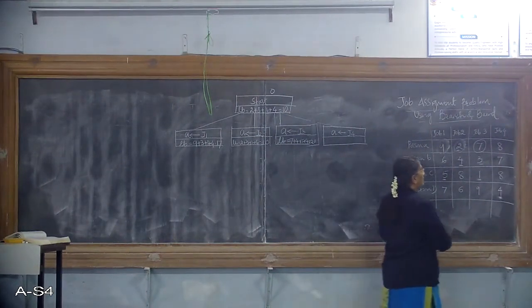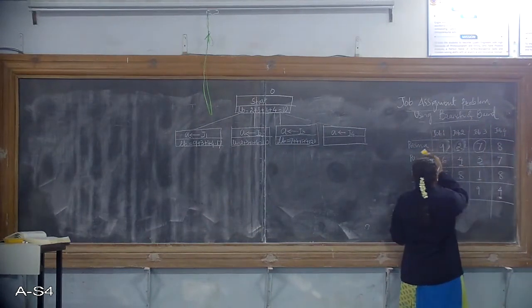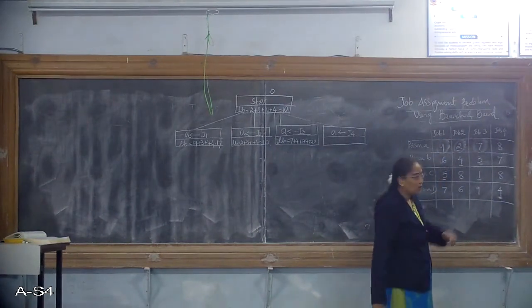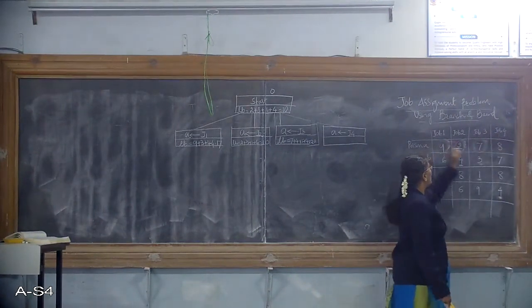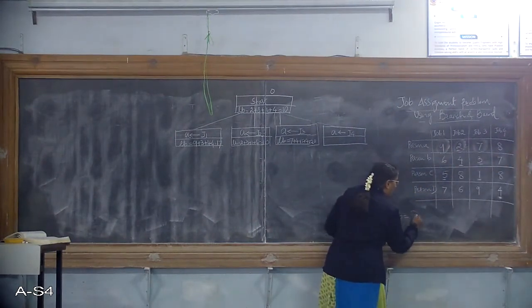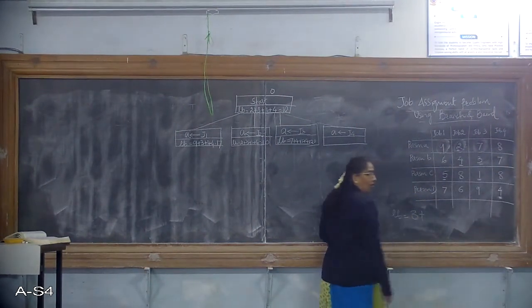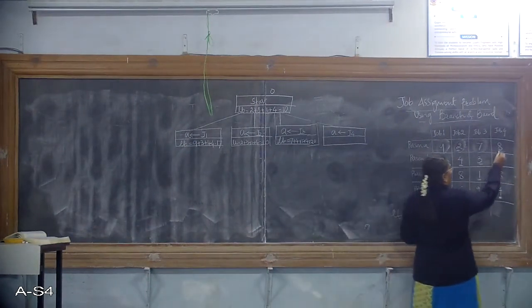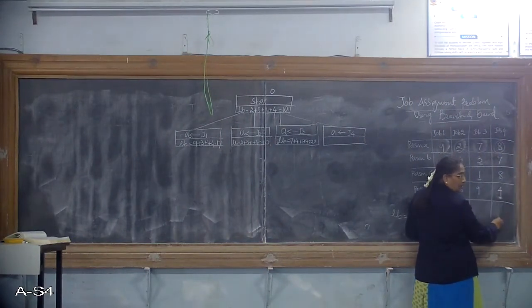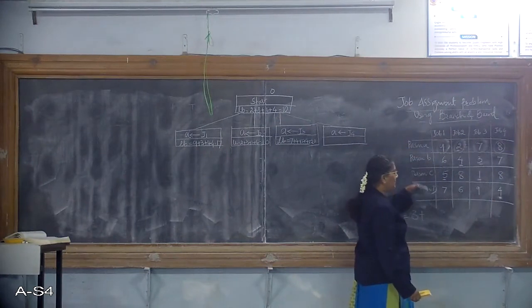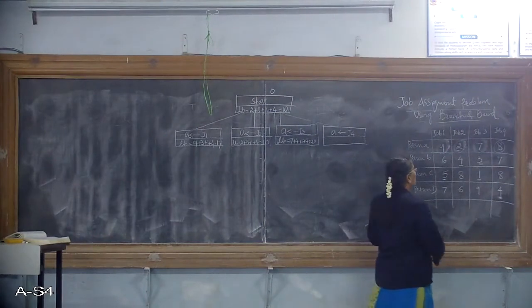When I want to assign job J4 to person A, the cost associated with that is 8. For the remaining rows, you need to pick the smallest values for the lower bound calculation.